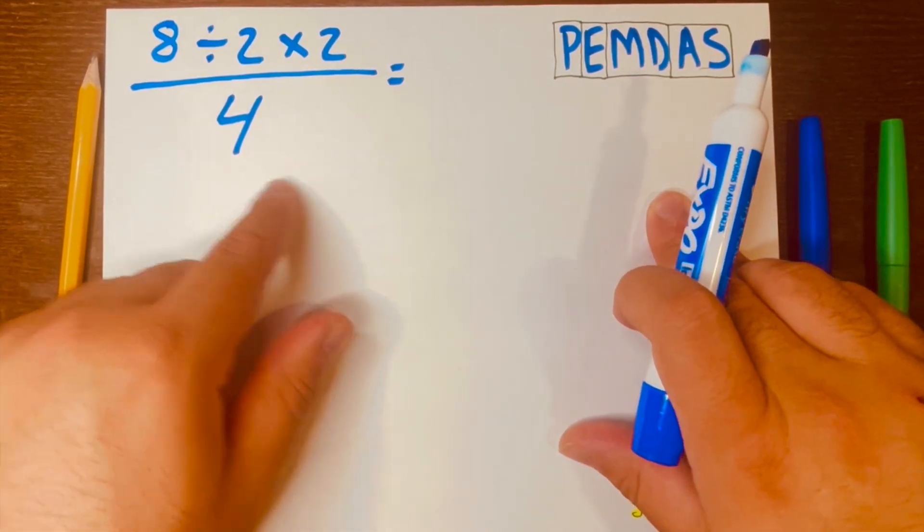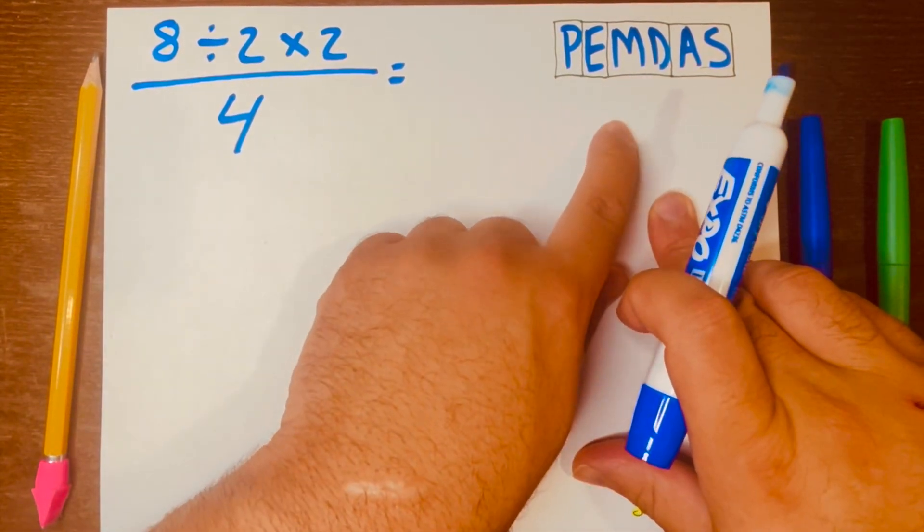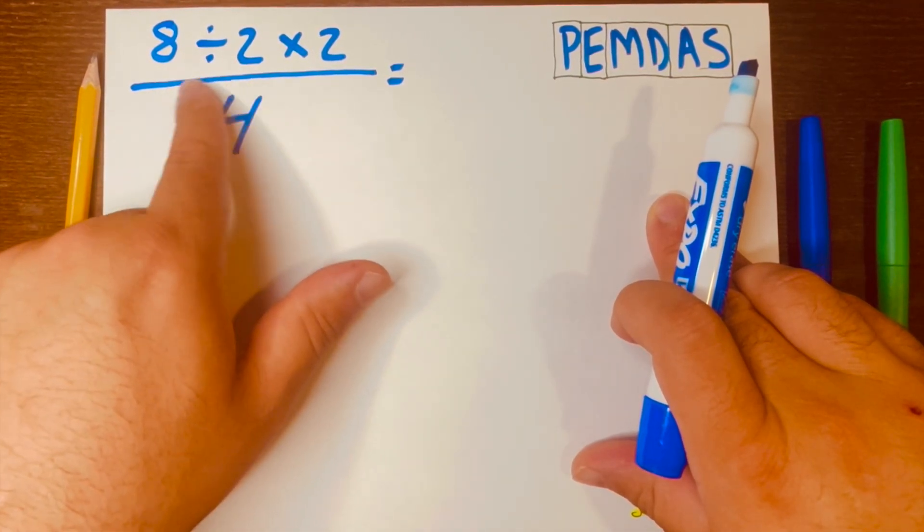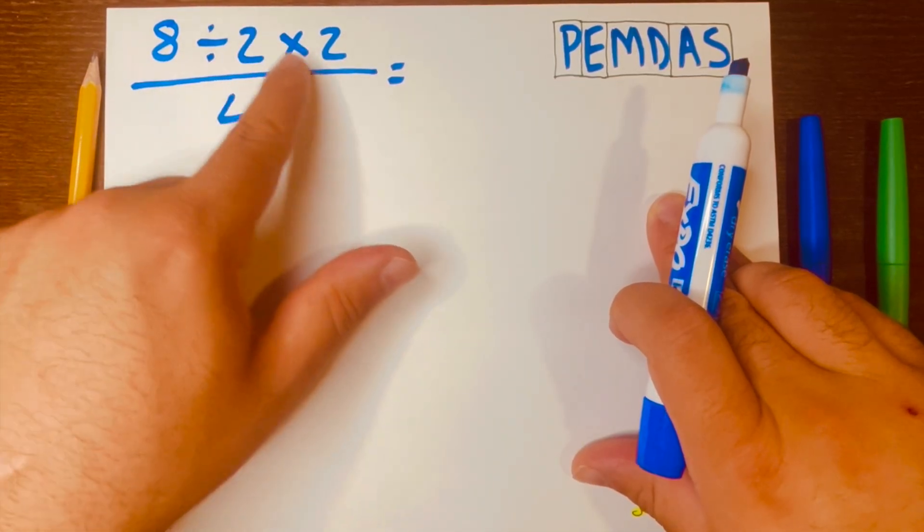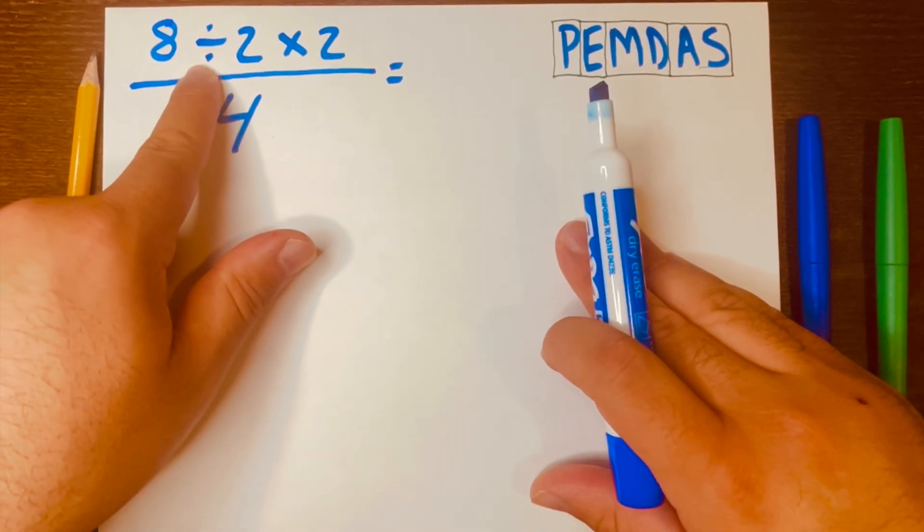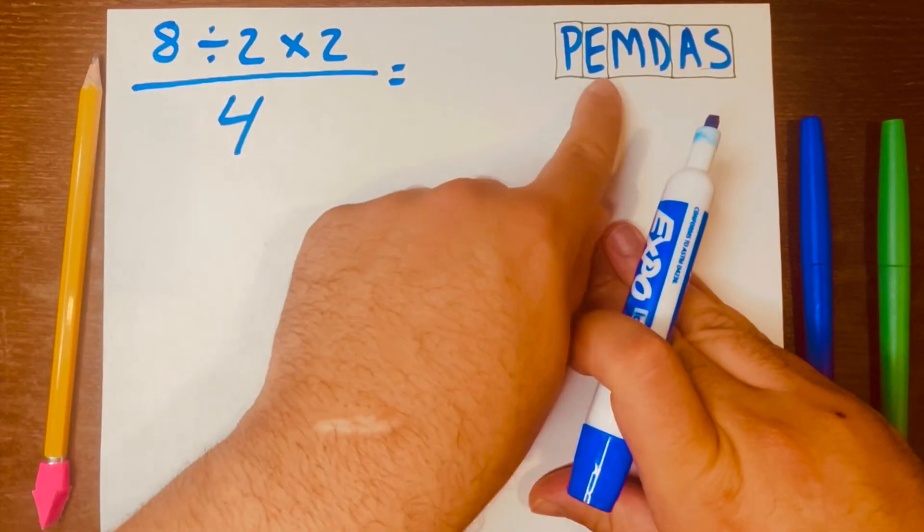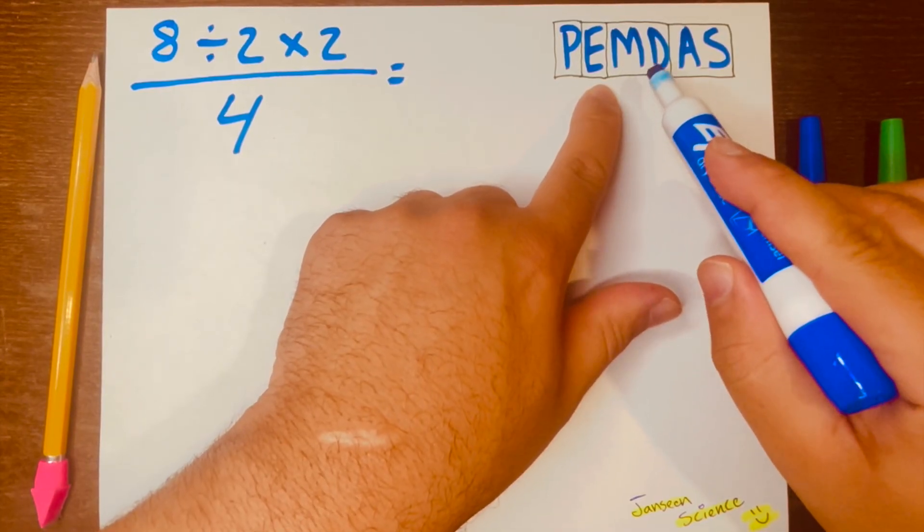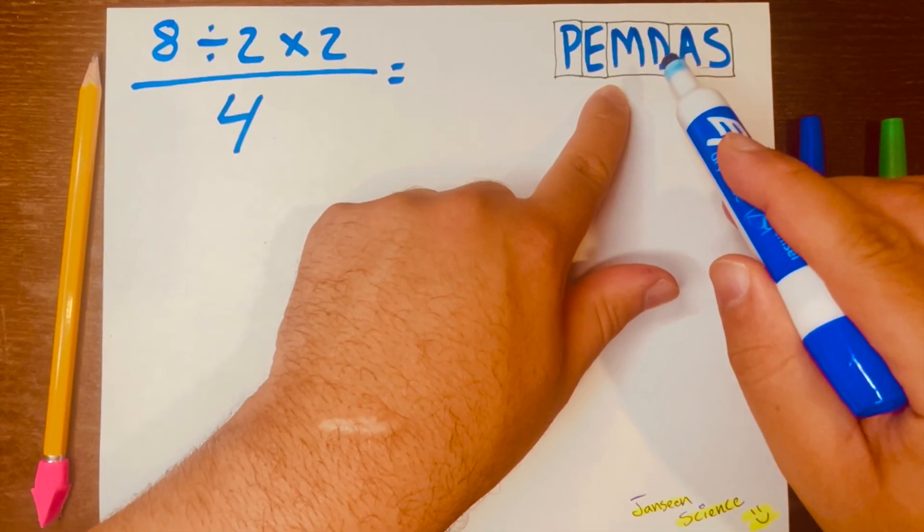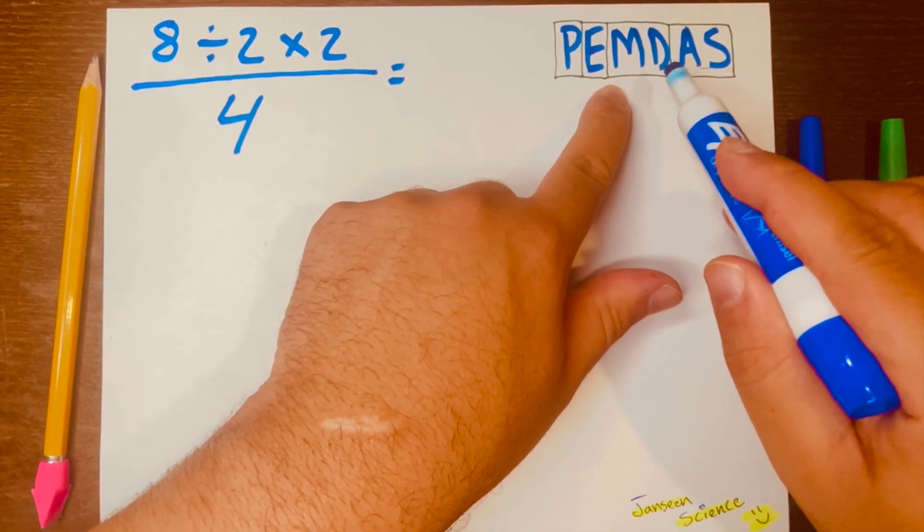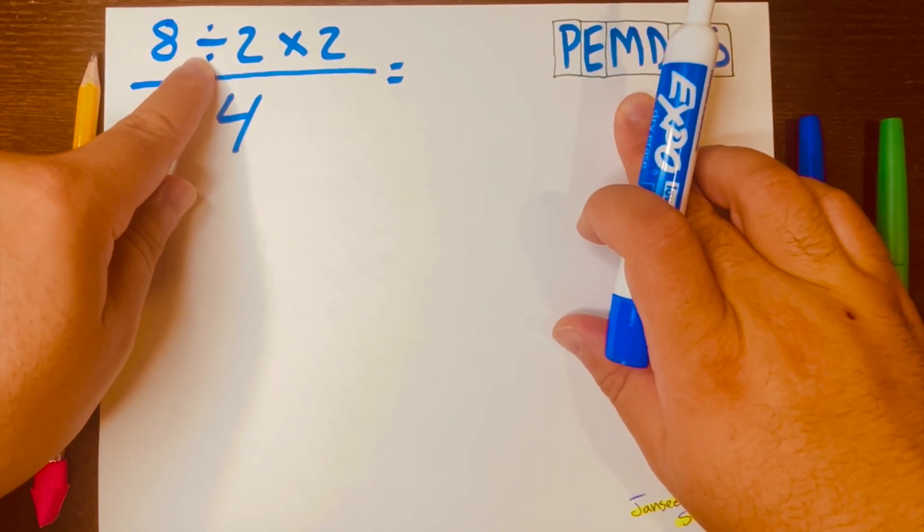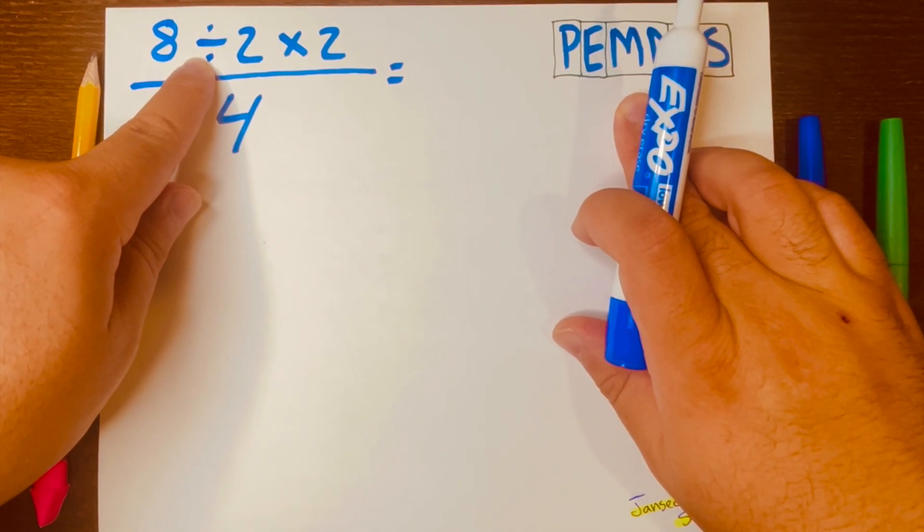Instead, you want to read from left to right within each level. So, looking at this problem, this top problem on top of the fraction, 8 divided by 2 times 2, if you look to your left, you see division. And if you go to PEMDAS, you notice that we are in the 3rd level, MD. And what goes first, it's either M or D. And because division is first on the left, then we start with division, not multiplication.